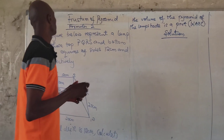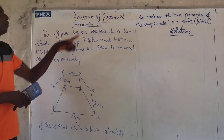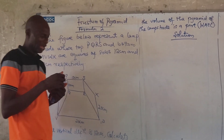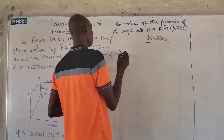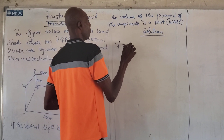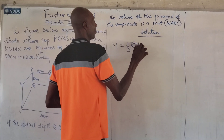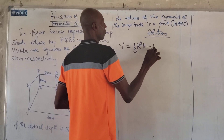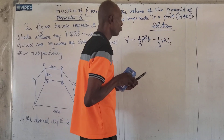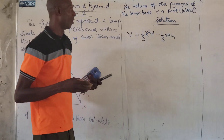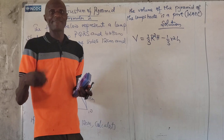Now, look at this. This is the full stream of a pyramid, Formula 2. The Formula 1 for full stream of a pyramid, which is volume, is 1 over 3, big radius squared, big height, minus 1 over 3, small radius squared, small height. That is what we are used to. I want to give you another formula.